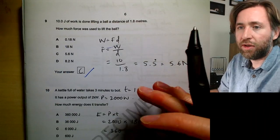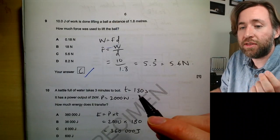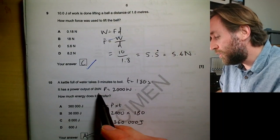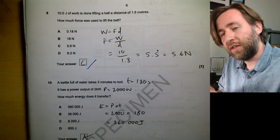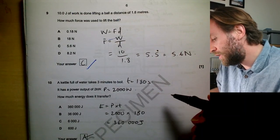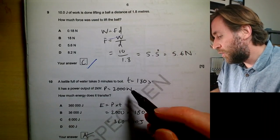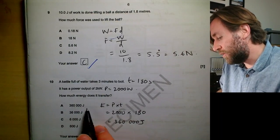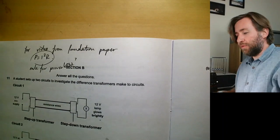A kettle full of water takes three minutes to boil — you see three minutes and straight away convert to seconds. It has a power output of two kilowatts — we don't use kilowatts, so convert to 2000 watts. The equation to memorize is energy equals power times time: 2000 watts times 180 seconds gives you 360,000 joules, so the answer is A.